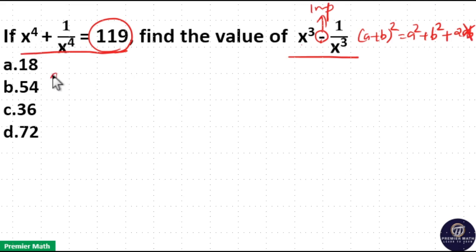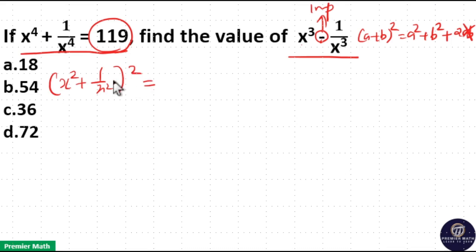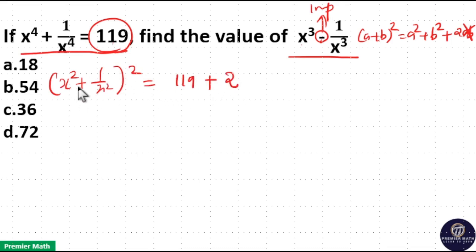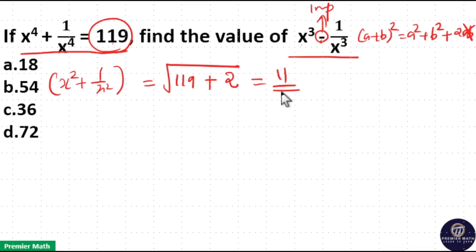Now, to get the first two terms, I should take the square of x square plus 1 by x square, which is equal to x raised to 4 plus 1 by x raised to 4, which is given as 119 plus 2 — the product of these two terms is equal to 2. So, x square plus 1 by x square is equal to root 121, which is 11.